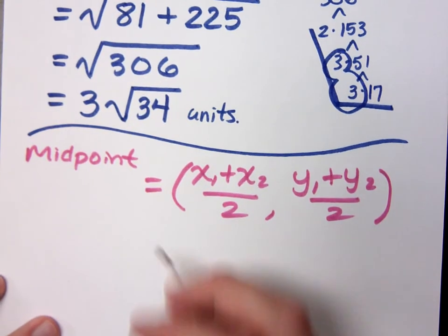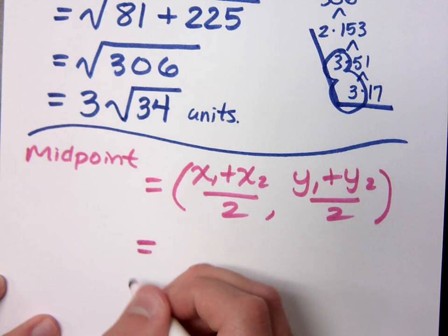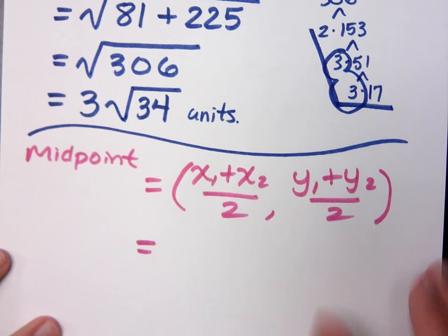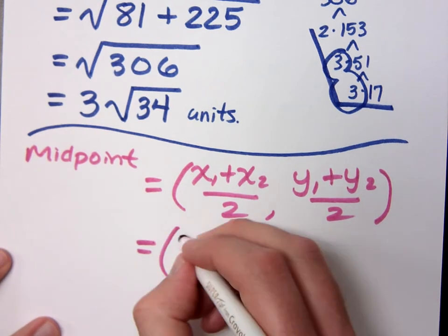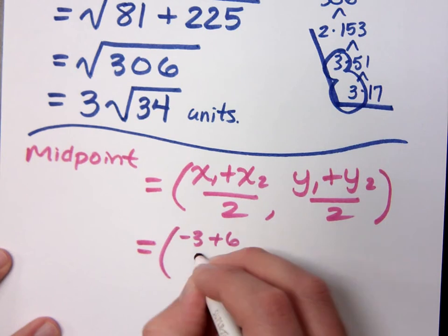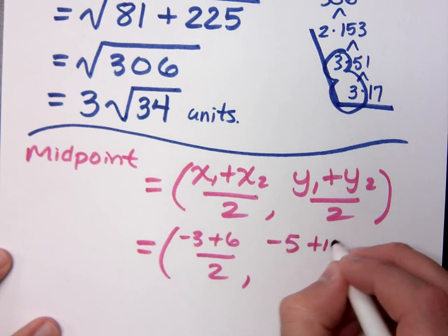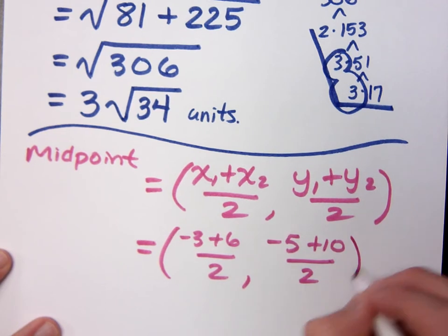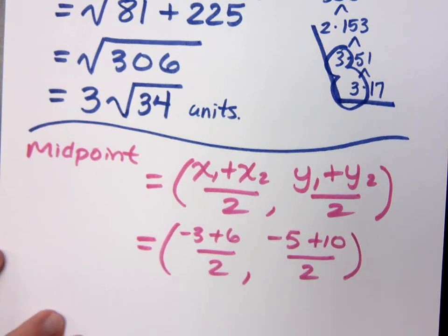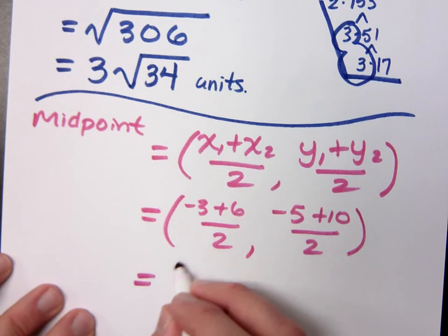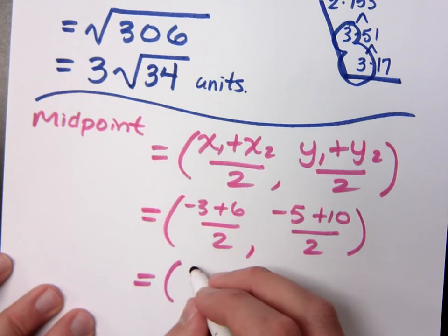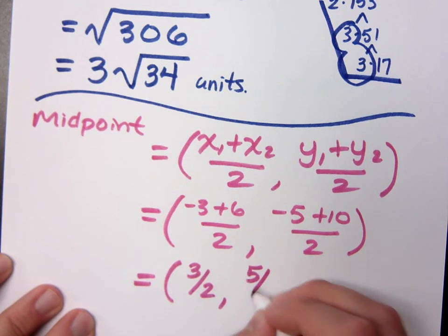So let's see. My x-coordinates were negative 3 plus 6 divided by 2, and the y-coordinates are negative 5 plus 10 over 2. So what do I have here for my midpoint? Three halves and five halves.